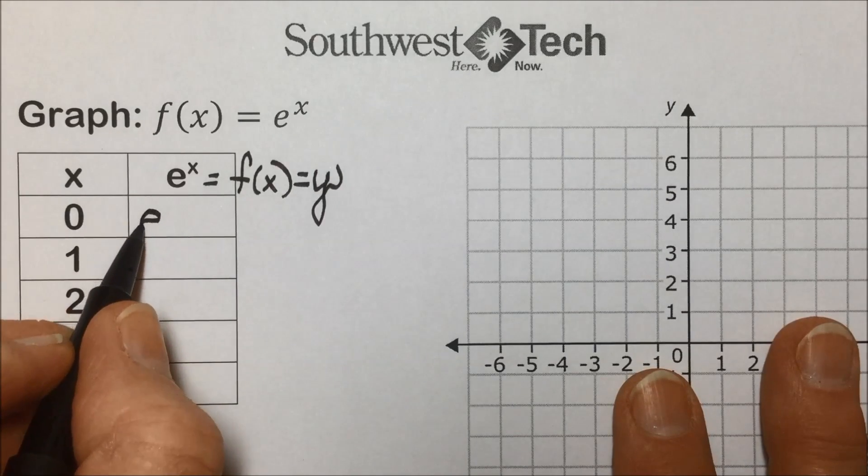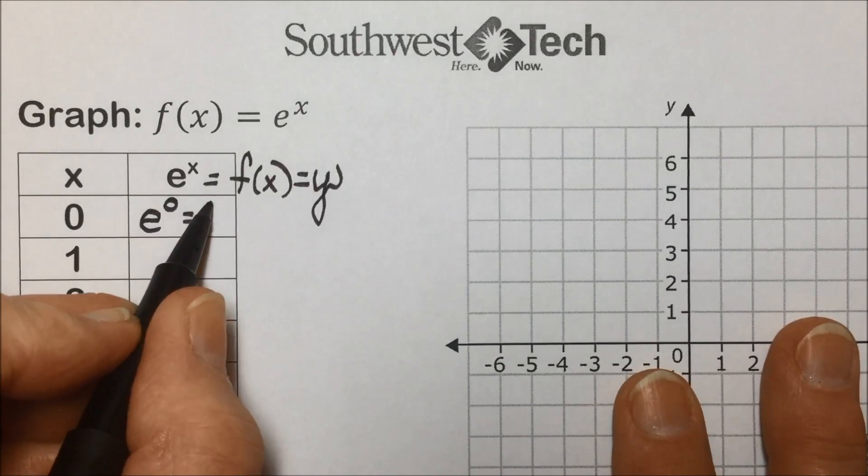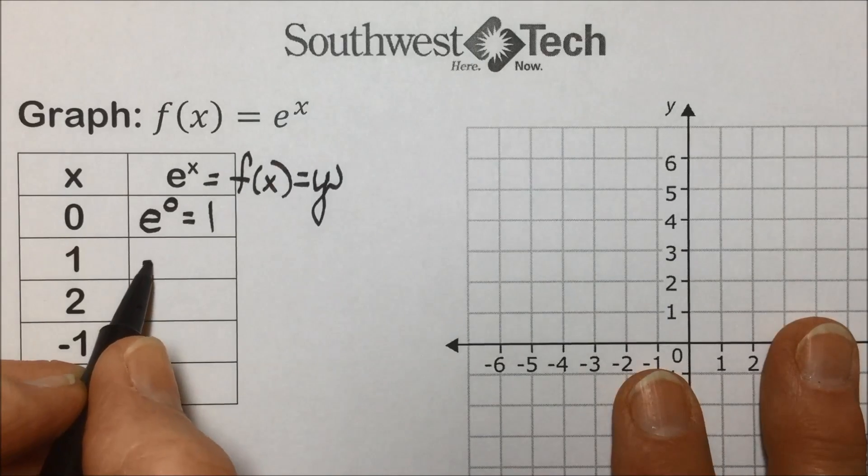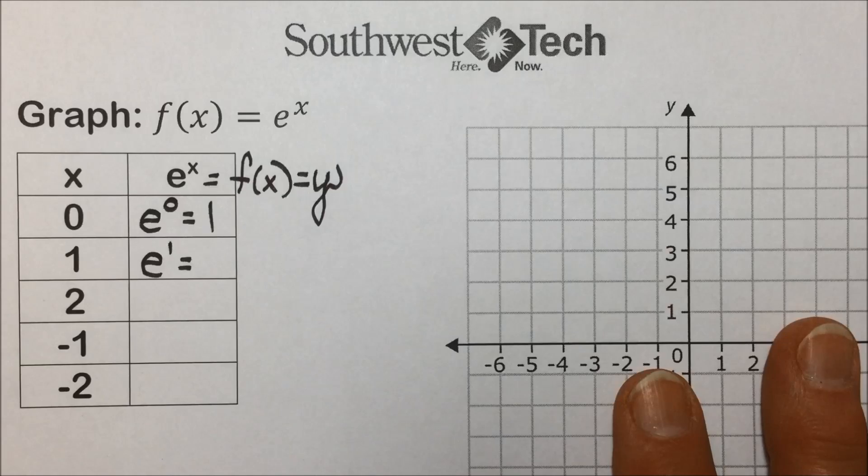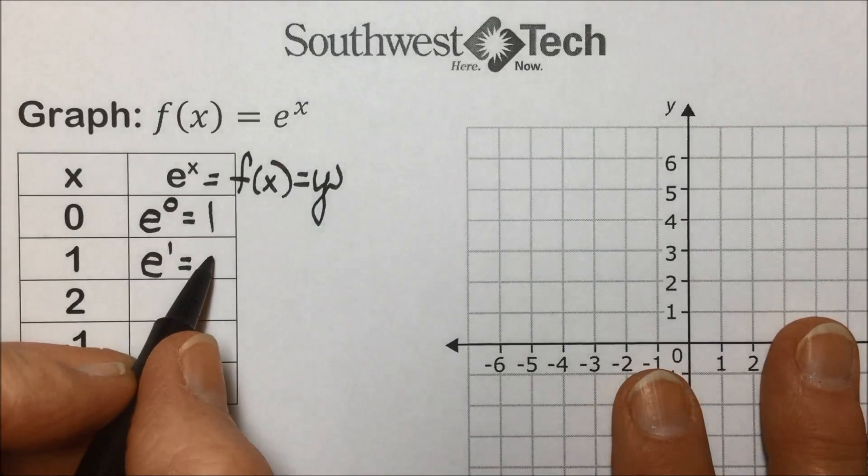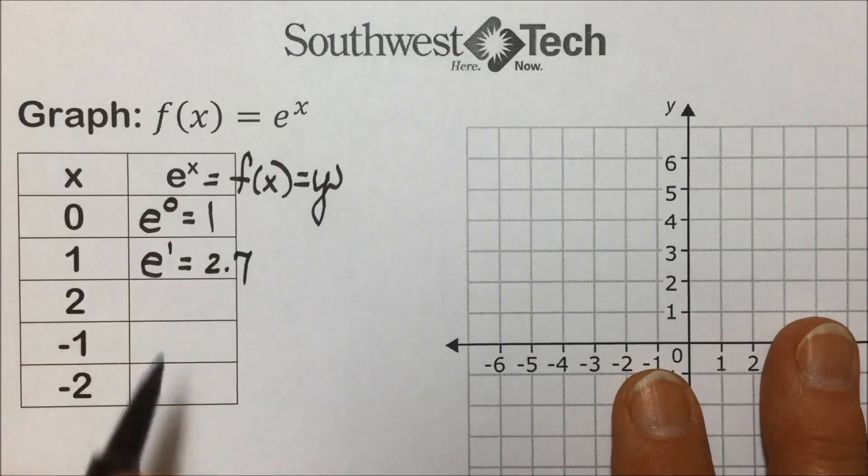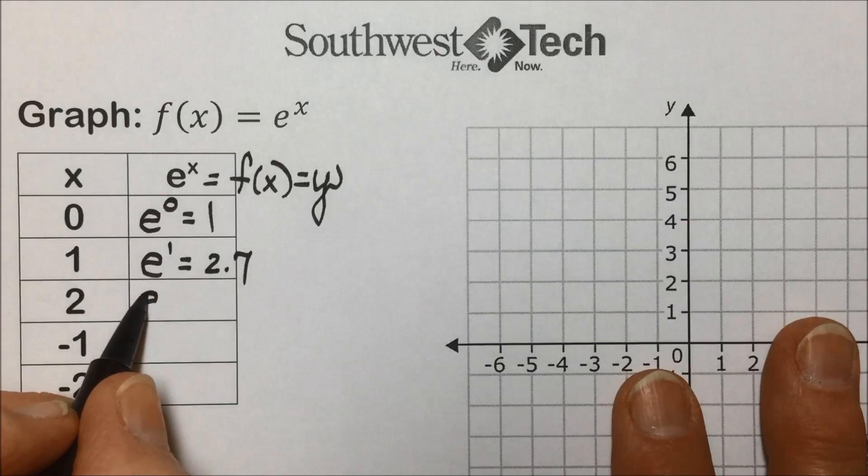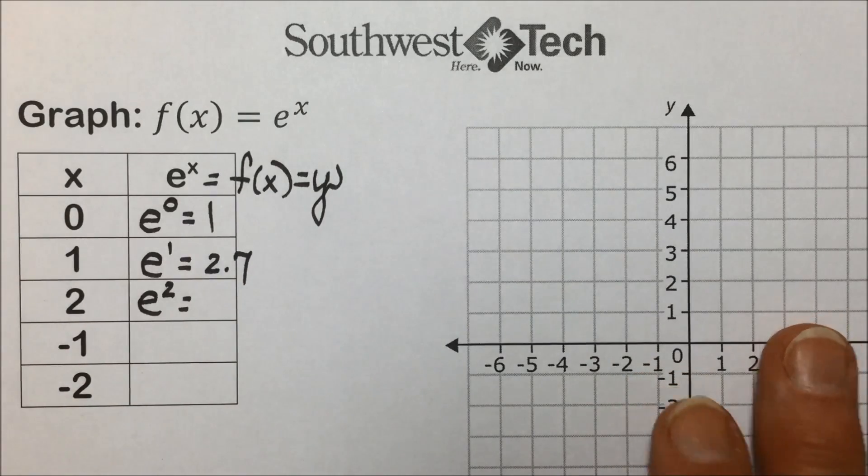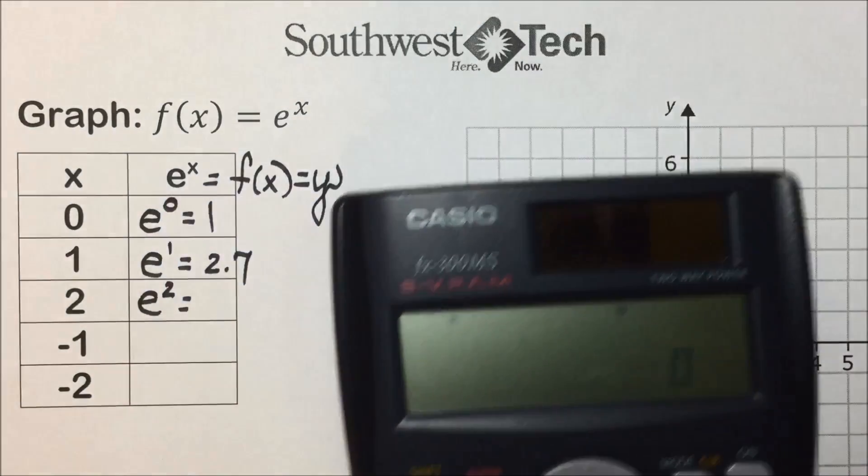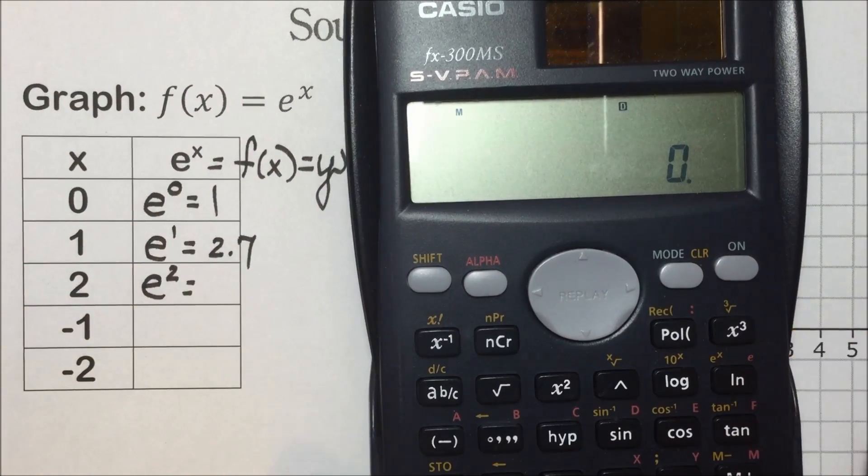Anything to the 0 power is equal to 1. e to the first power is going to equal e, and as I said, has an approximate value of 2.7. e to the second power would be 2.7 squared, but let's use the calculator and get an exact value.